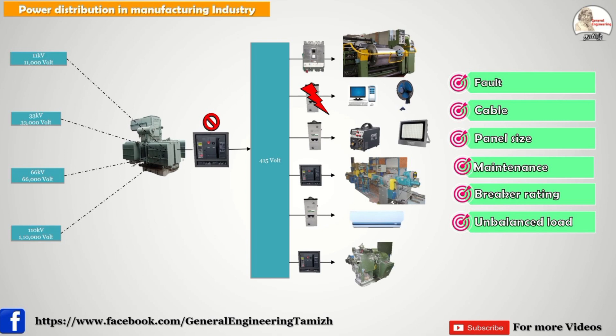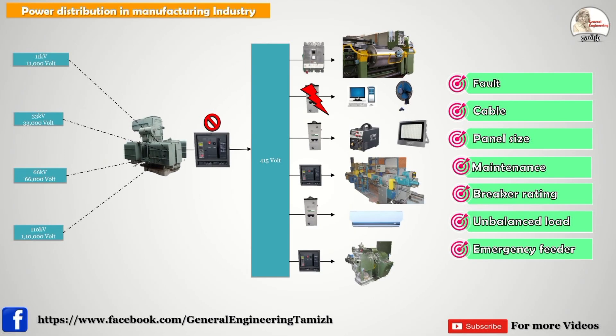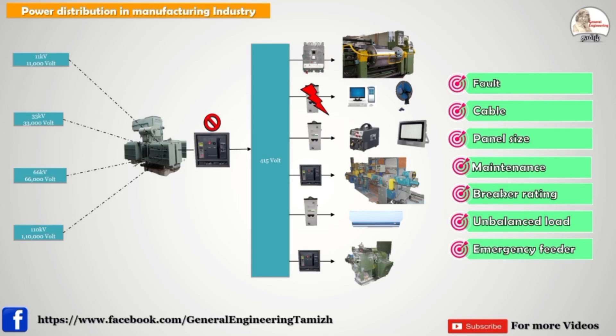The next scenario is emergency feeder. Manufacturing industries run all three shifts. If a power failure happens at night, we need to provide basic lighting supply for workers. But if the total supply is off, how can we provide lighting? We need a separate emergency feeder maintained apart from the regular power distribution system. That is also not possible in this single-panel distribution system.